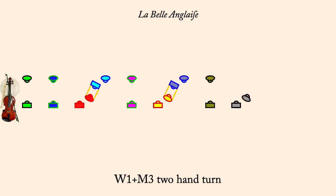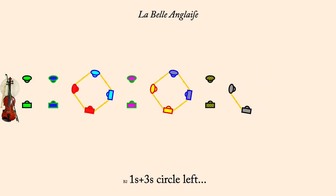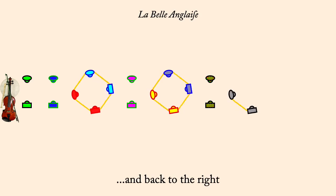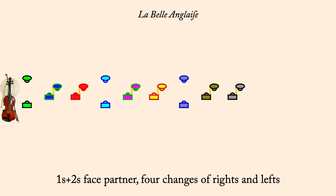Ones and threes circle left. And back to the right. Ones and twos, four changes of rights and lefts.